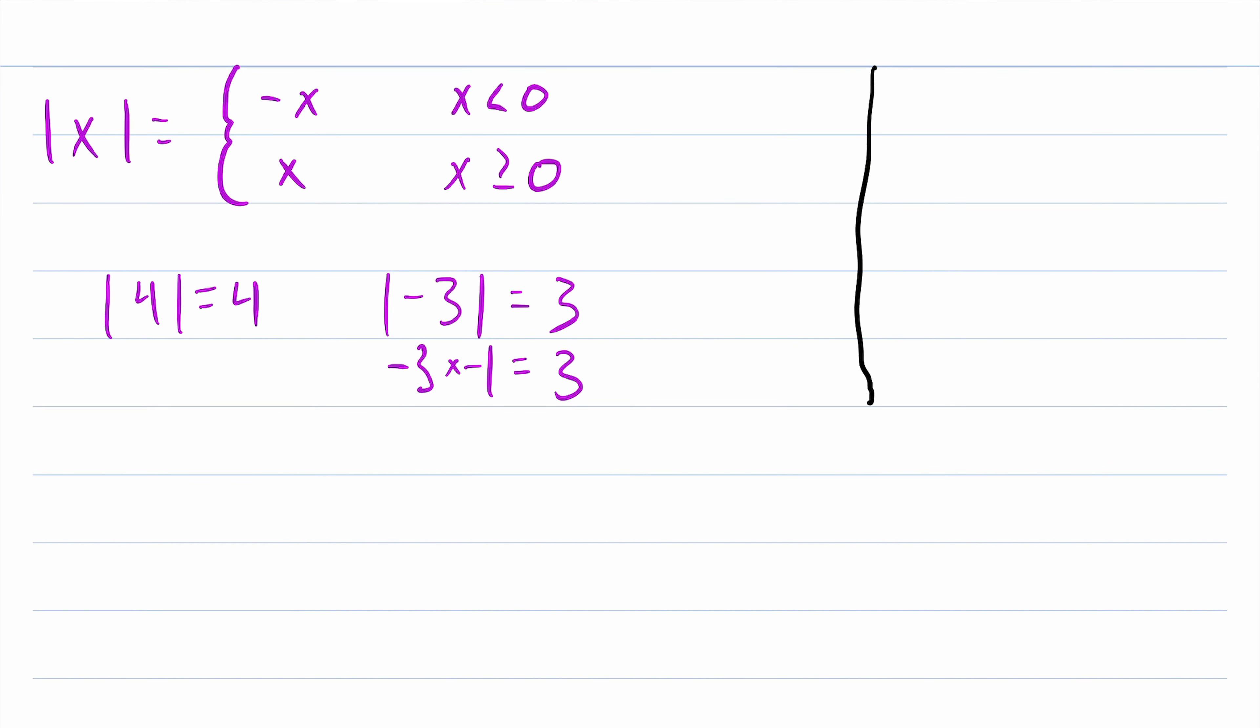And you might be familiar with the graph of the absolute value function. Like with the last piecewise function we looked at, in the graph of the absolute value function, we see a sudden change in the appearance of the function. It goes from this line with a negative slope, y equals negative x, to this line with a positive slope, y equals positive x.